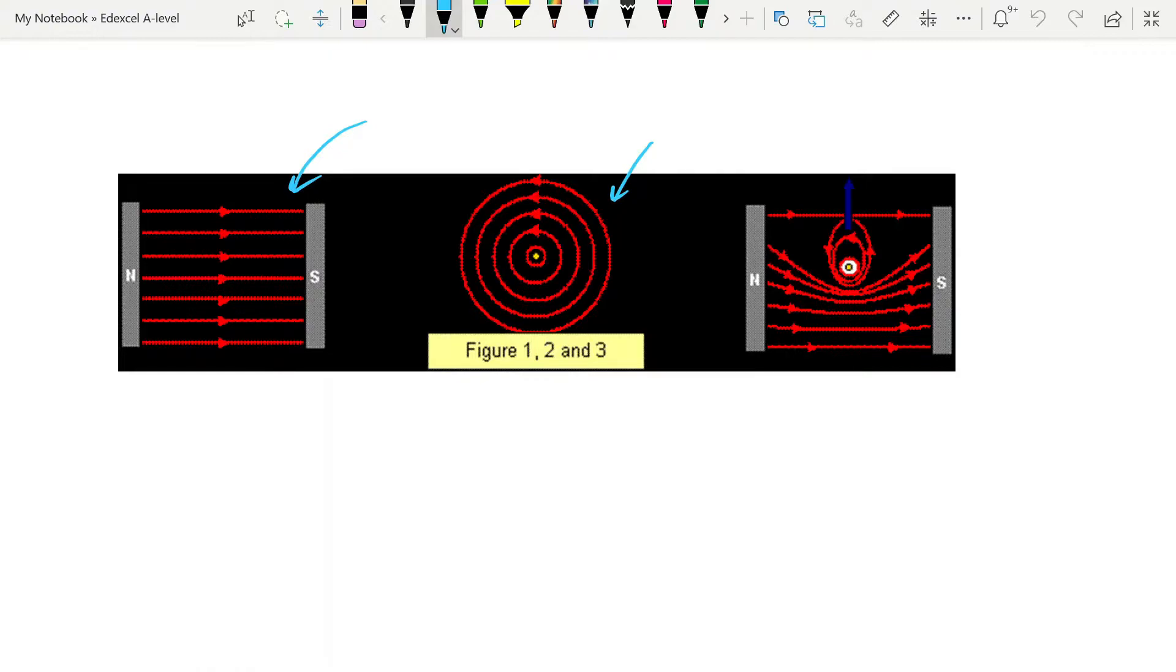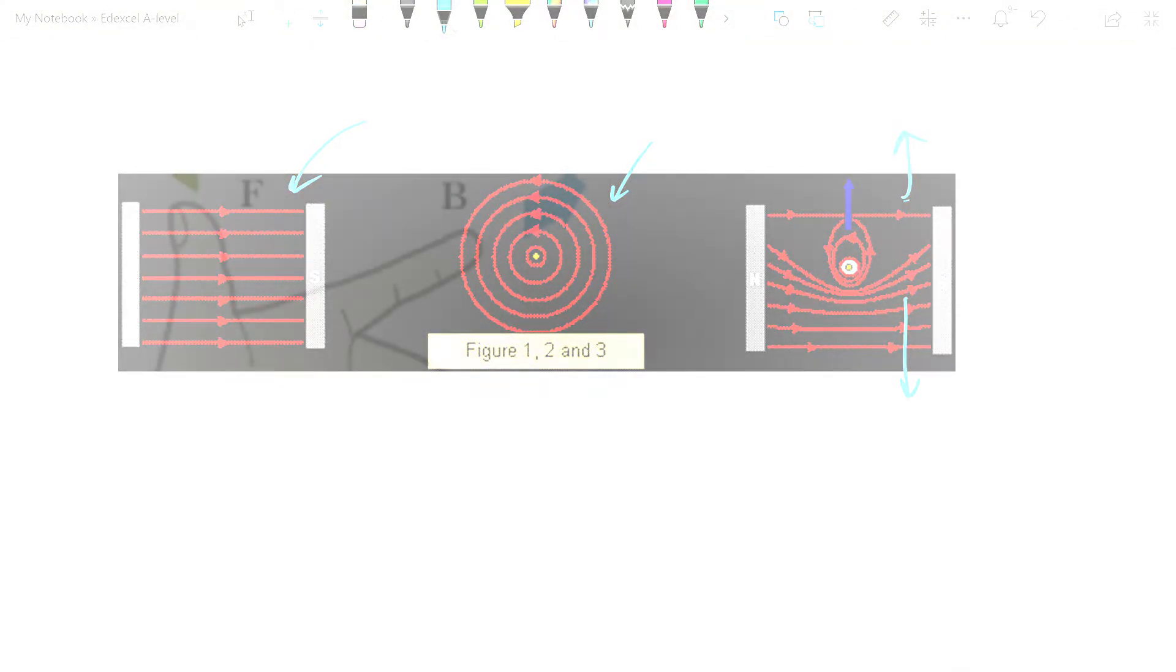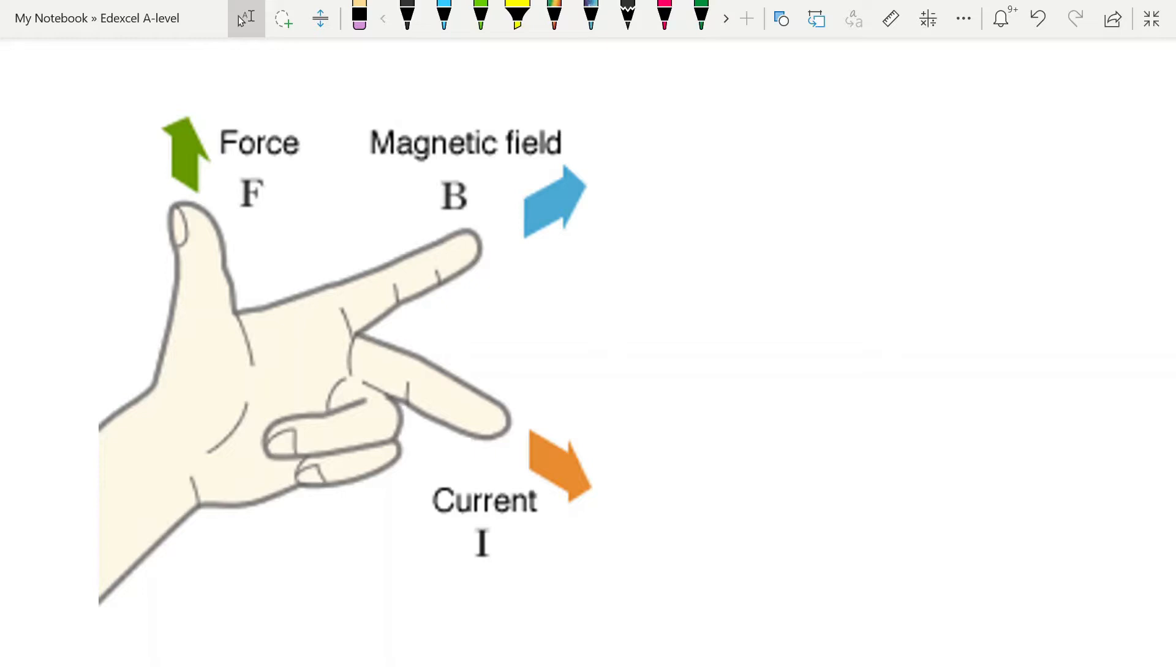Depending on the direction of the field around the wire you're going to get a force being exerted either upwards as you can see here, or if the current is going in the opposite direction downwards. The direction of that force is controlled by Fleming's left hand rule which we met before as well.